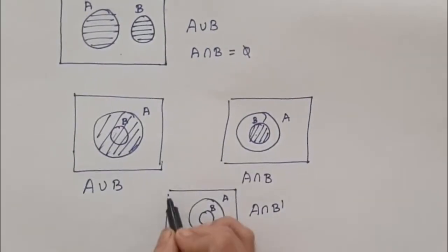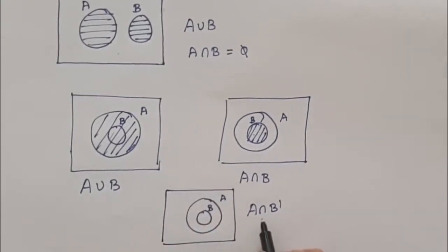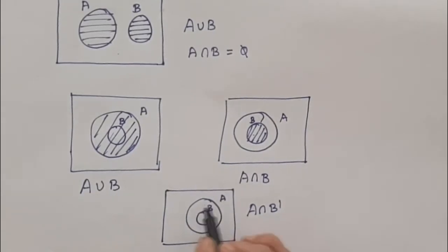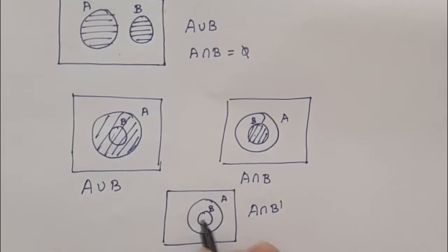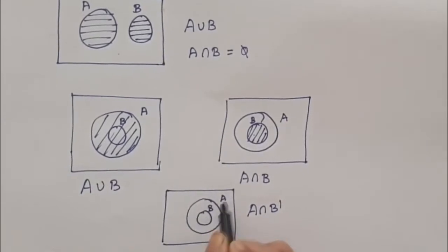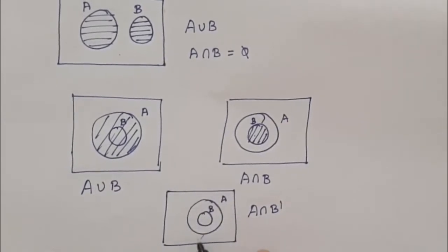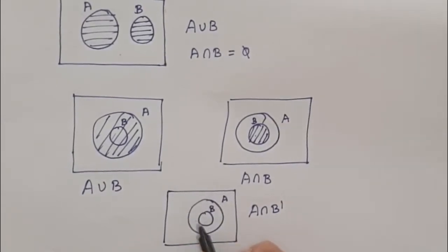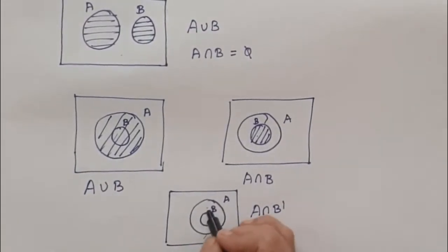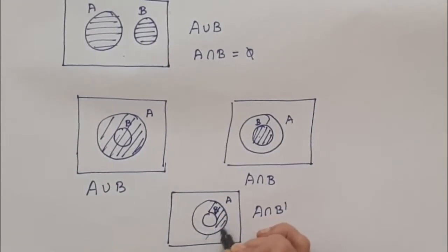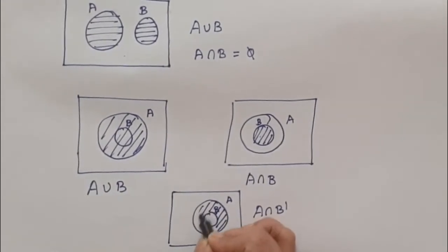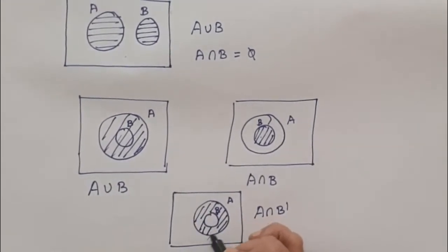In this diagram, if we need to shade A intersection B complement — B complement means we leave out B, and all the rest outside B is B complement — intersected with A. So this will be the region A intersection B complement.